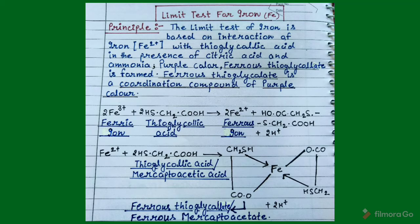First I will discuss with you the principle of the limit test for iron. The limit test for iron is based on the interaction of iron with thioglycolic acid. In the presence of two compounds — citric acid and ammonia solution — a purple-colored ferrous thioglycolate is formed. Ferrous thioglycolate is a coordination compound of purple color.